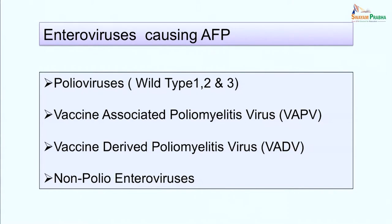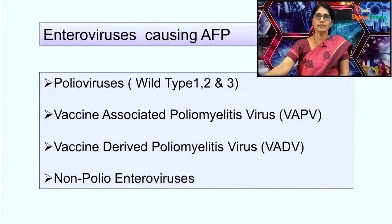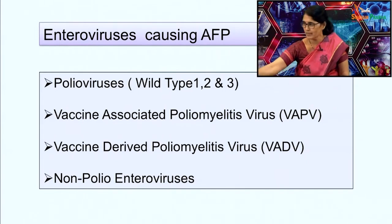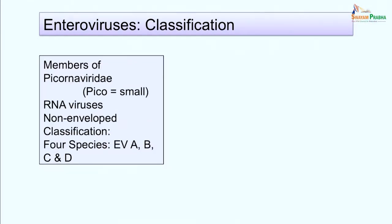Enteroviruses are the most important cause of acute flaccid paralysis. Polioviruses — which include wild poliovirus types 1, 2, and 3 — vaccine associated poliomyelitis virus, vaccine derived poliomyelitis virus, and non-polio enteroviruses which include Coxsackie viruses A and B, echoviruses, and some enteroviruses like enterovirus 70 and 71, are the important enteroviruses which cause acute flaccid paralysis. These enteroviruses belong to family Picornaviridae — pico means small — so these are small RNA viruses, with a single stranded RNA molecule; they are non-enveloped viruses, and there are 4 important species: enteroviruses A, B, C, and D.